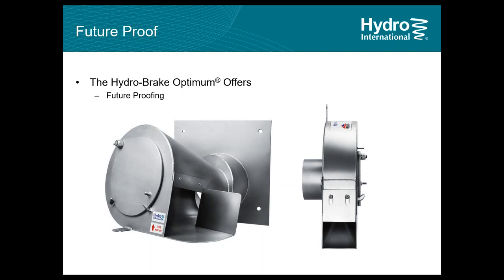This is done by providing an adjustable inlet plate that allows you to adjust the discharge flow rate at a later stage post-installation. For example, if your current design allows discharge of 100 liters per second but in future you will be allowed to discharge 120 liters per second, a specially designed HydroBrake allows this without changing the device. An operator simply needs to go inside the manhole when it's isolated, loosen the screws on the inlet, and slide the plate to the desired marked level, altering the discharge flow rate to a predetermined value.